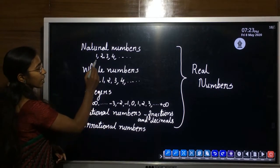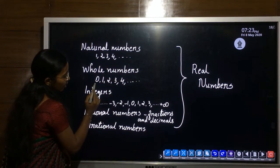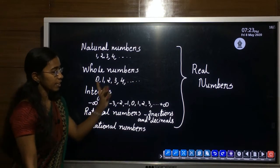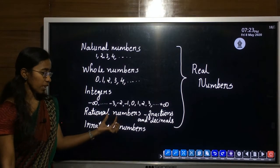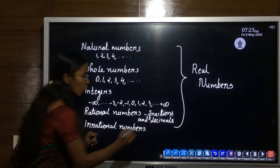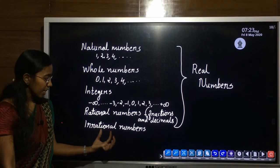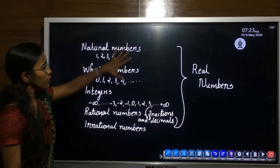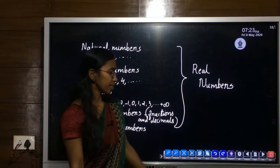Natural numbers are 1, 2, 3, 4, etc. Whole numbers are 0, 1, 2, 3, 4, etc. Integers range from minus infinity to plus infinity. Rational numbers are numbers which can be expressed in the form of p by q — all fractions and terminating decimals are rational numbers. Irrational numbers are those which cannot be expressed in the form of p by q. The set of all these types of numbers together is our real numbers.